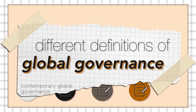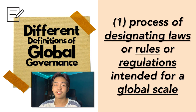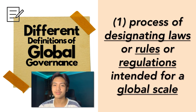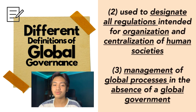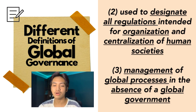The next part is the different definitions of global governance. Having different perspectives, global governance can be defined in numerous ways. Global governance is the process of designating laws, rules, or regulations intended for a global scale. It means there is acceleration of worldwide interdependence, both between human societies and between humankind and the biosphere. Moreover, global governance is used to designate all regulations intended for the organization and centralization of human societies.